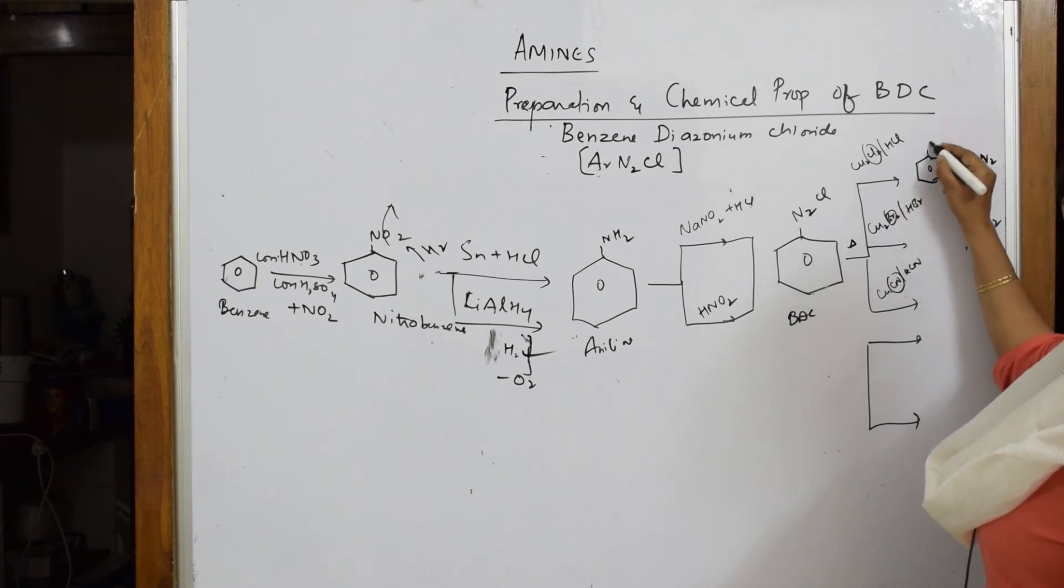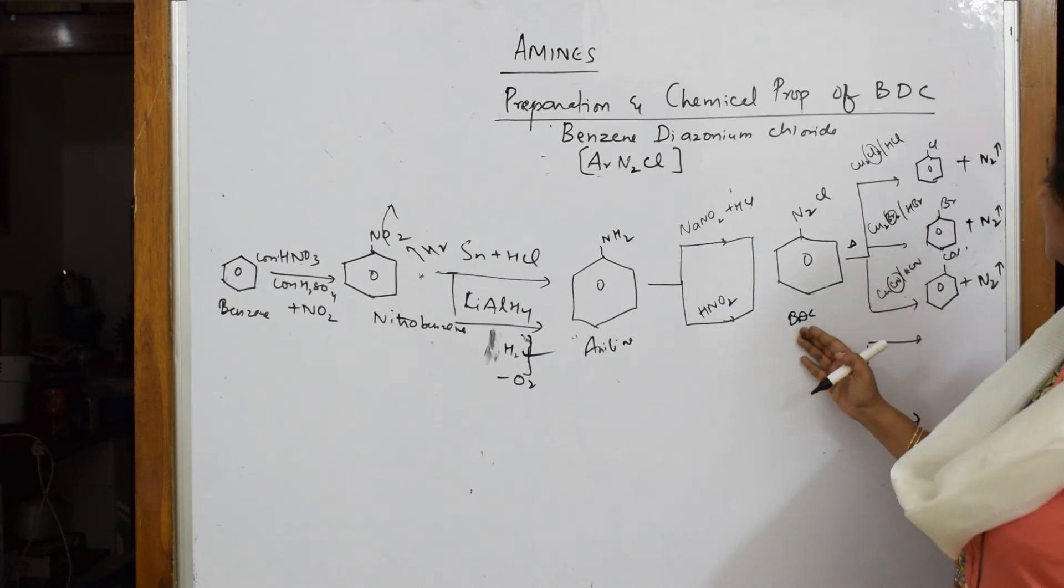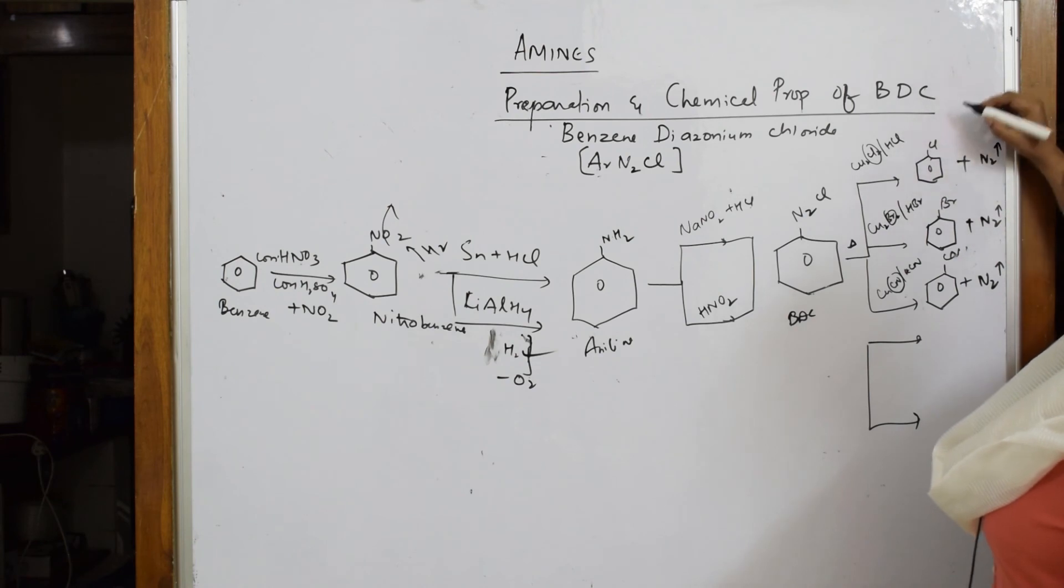Here the nucleophile is bromine, so bromobenzene. Here cyano is a group which is going to attack - cyanobenzene. This reaction where you're converting BDC to chloro, bromo, and cyanobenzene.